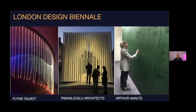On to the London Design Biennale — I ran the 2018 edition, which was the second edition. It's called the Biennale because it's modelling itself on the Venice Biennale with the idea that you have different pavilions that belong to different countries. Here's a snapshot of some of the artists, including Flynn Torbot, an Australian artist, and Taban Lugu Architects from Turkey — a piece that had already been exhibited. With a Biennale or any festival, you have the scope to exhibit works that have been previously exhibited.